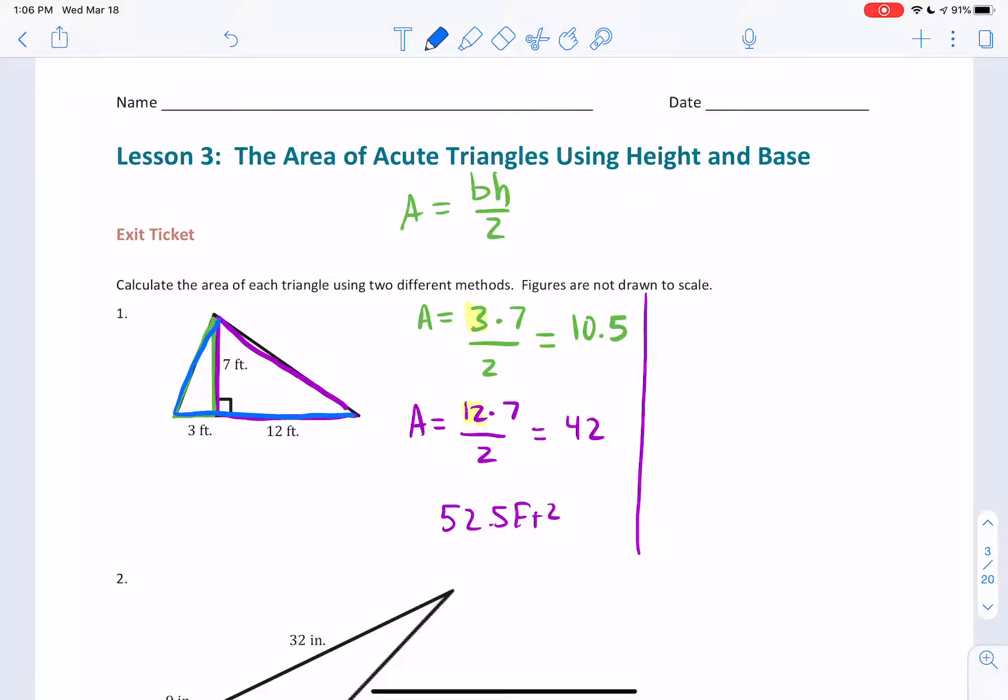The blue triangle is the entire triangle. And what's cool about this is that the height, notice the height does not change. The height is still 7. However, the base ends up being 3 plus 12. The base is now 15 feet. I added the bases.